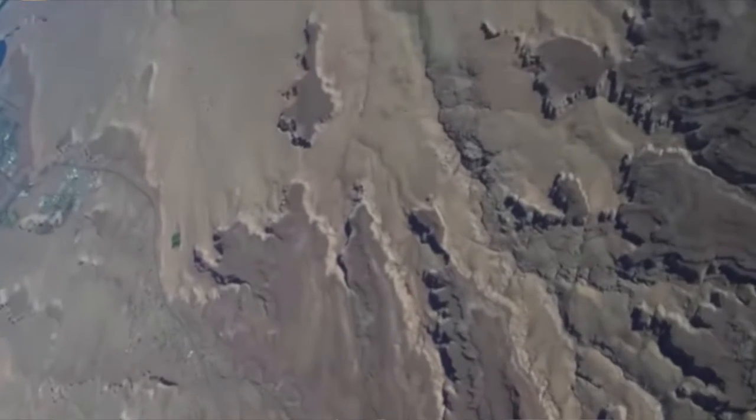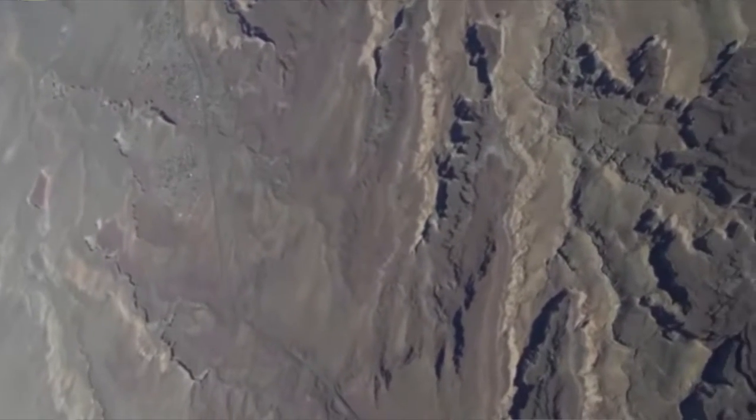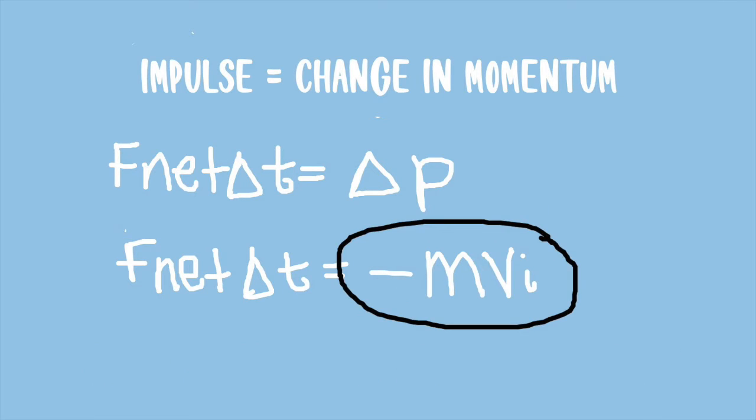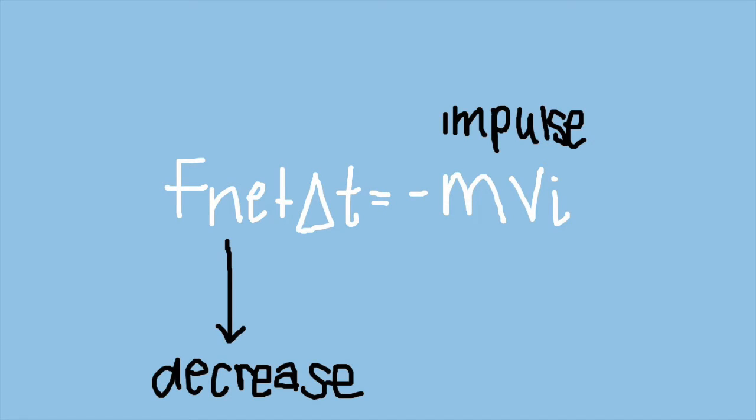To bring himself to a safe stop, Blaine needed to change his momentum, or in simpler terms, his damage. The floor would provide the impulse that would change this momentum. We could represent this with the equation impulse equals the change of momentum. The impulse stays the same, and so to decrease the amount of force exerted on Blaine, the time must increase.